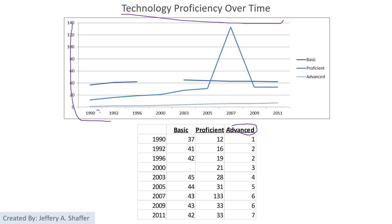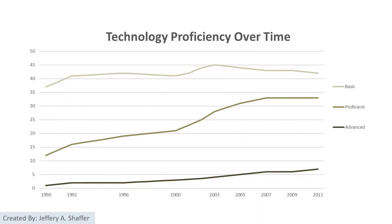There is a two-year difference and a four-year difference in the time scale. We also have some date errors, missing values where we don't know the value for a time period, and those three colors are very close together, making it hard to tell the difference. A revised version solves some issues but is still hard to compare data, especially since the advanced category has a very small number. So a line chart may not be the best choice.